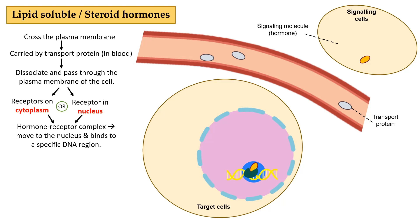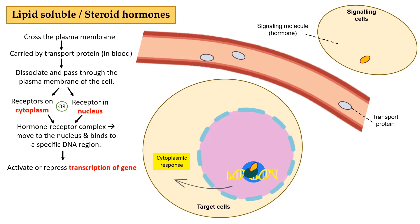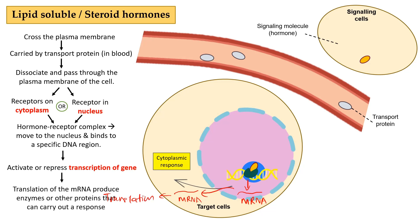The hormone-receptor complex then moves to the nucleus and binds to specific regions on the DNA. This will activate or repress transcription of a gene, which will eventually produce a cytoplasmic response. Activation of a gene will produce mRNA, which is transported to the cytoplasm and undergoes translation. Translation will then produce enzymes or other proteins that carry out the response.